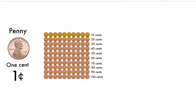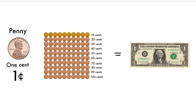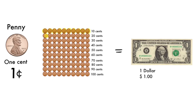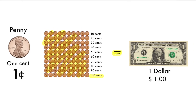When you have a total of 100 cents, that is equal to having one dollar bill. Remember, you need 100 pennies in order to make one dollar bill. That means that 100 cents is equal to one dollar.